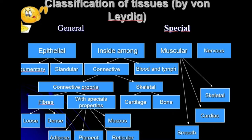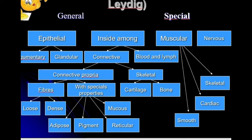Fiber connective tissue can be divided into loose and dense connective tissues. There is also a special group — connective tissue with special properties — such as adipose, pigment, reticular, and mucous tissues. They have a different structure from fiber connective tissue and therefore have special functions.